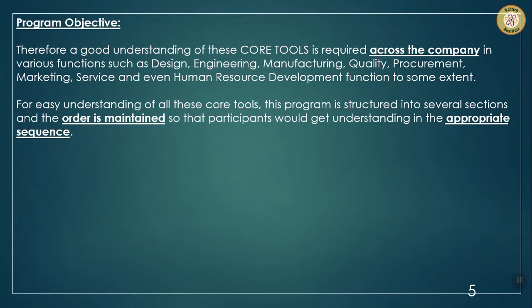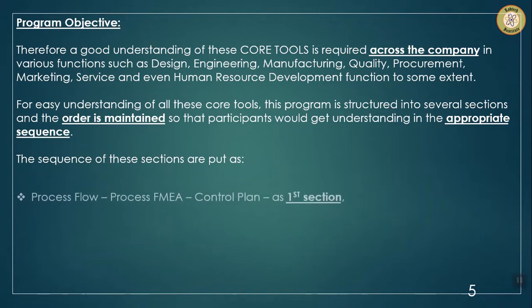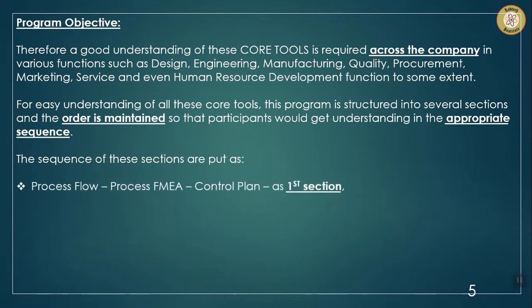For easy understanding of these core tools, this program is structured into several sections and a particular order is maintained so that participants gain understanding in the appropriate sequence. The sequence begins with process flow, process FMEA, and control plan as the first section, as these three core tools are quite interrelated and should be documented simultaneously. That is why these three are combined in the first section.